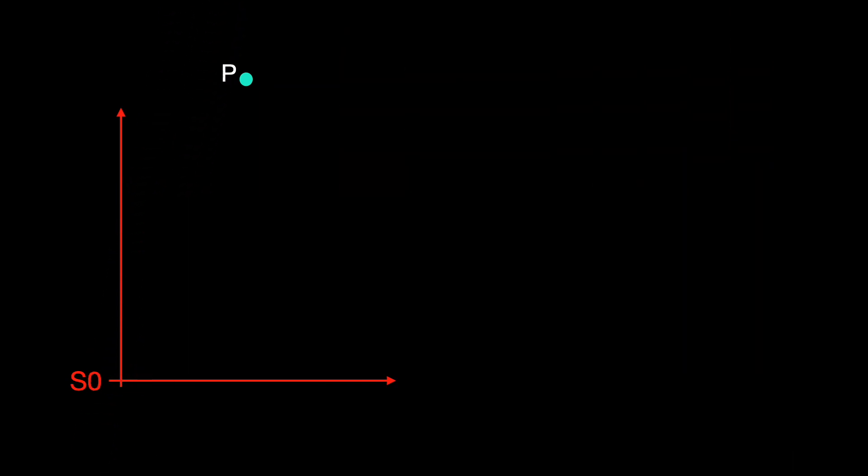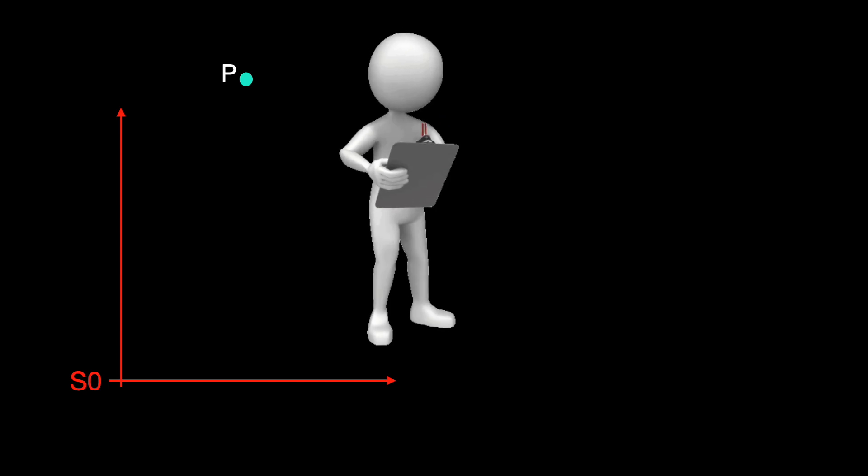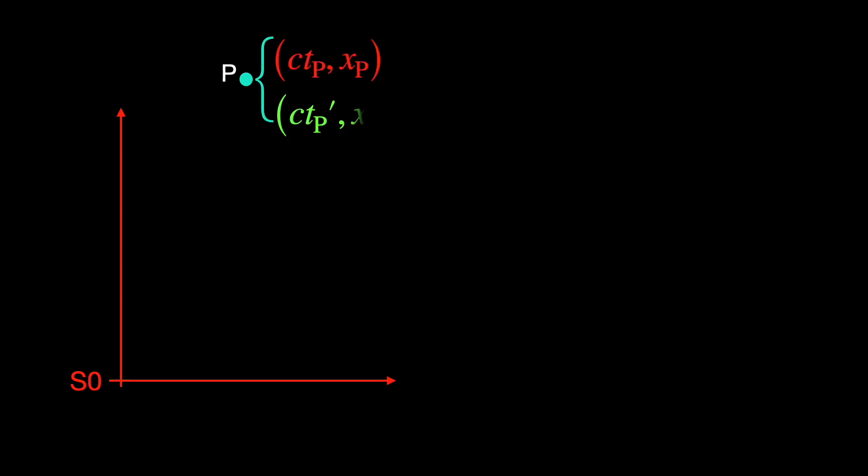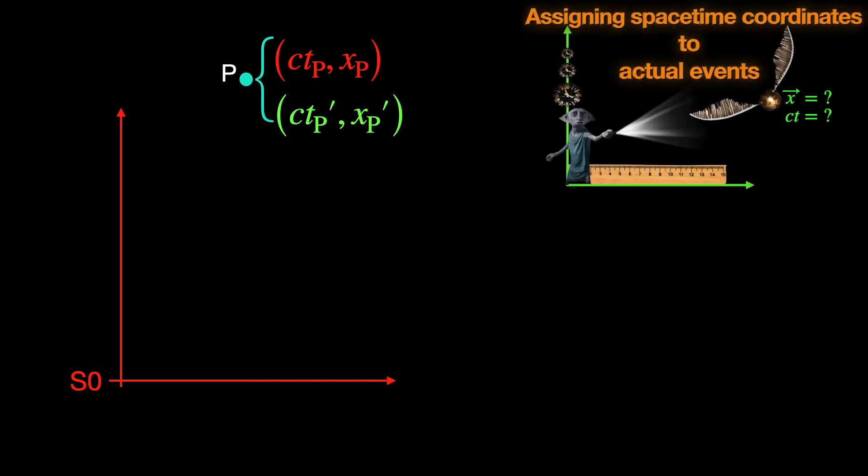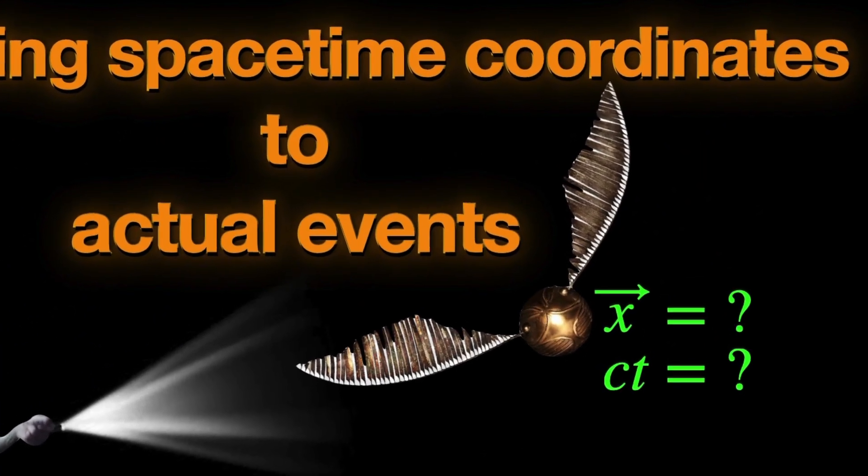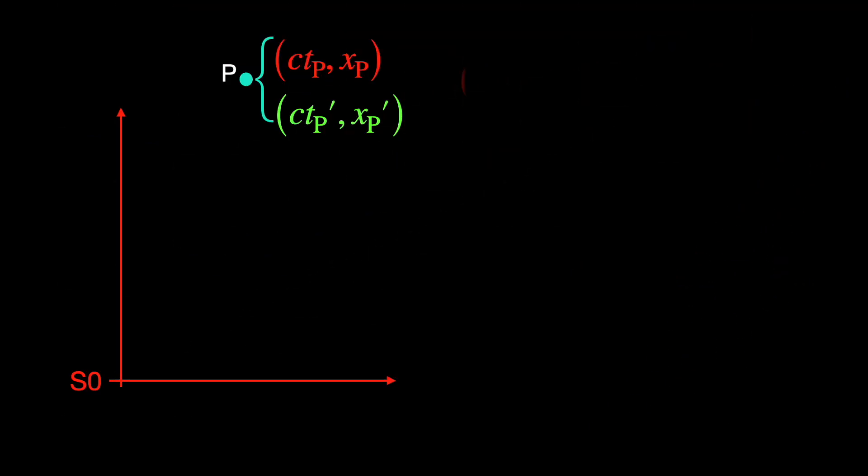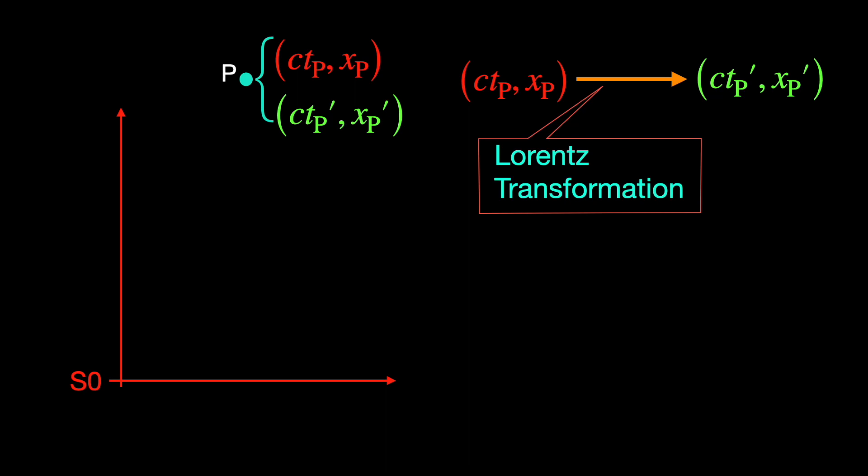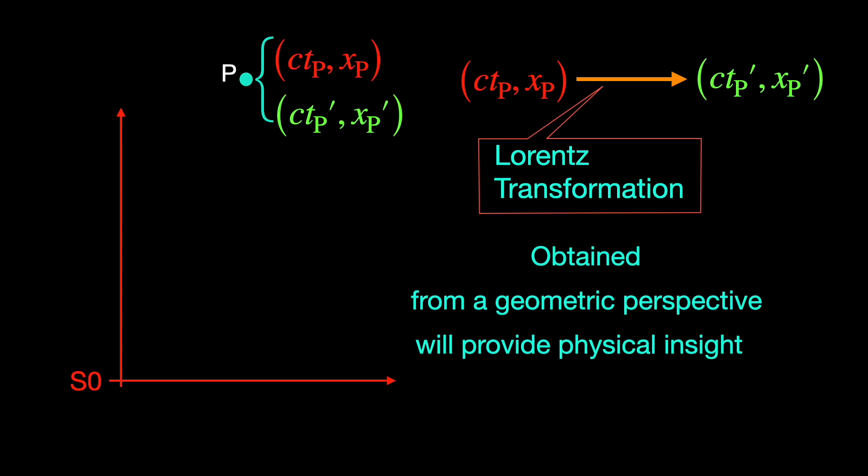To identify the event p, observers in s0 and s1 frames assign space-time coordinates to it. Let's denote them by unprimed and primed ctp and xp respectively. How this coordinate assignment is done has already been covered in the channel. Anyway, these primed and unprimed space-time coordinates are related mathematically by what is known as the Lorentz transformation equations. We would like to obtain them from a geometric perspective that gives us some sort of physical insight.